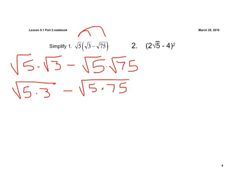Now let's keep rewriting it. We now have the square root of 15 minus the square root — you might need to use a calculator. If we multiply those together, we're going to get 375.